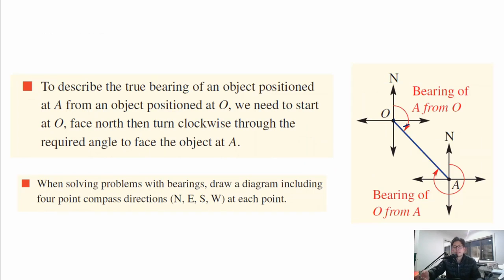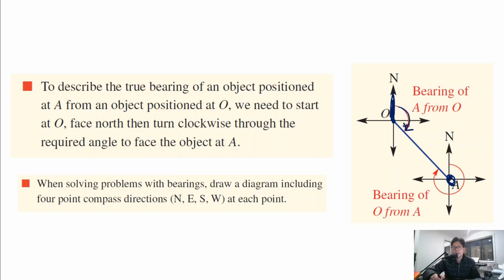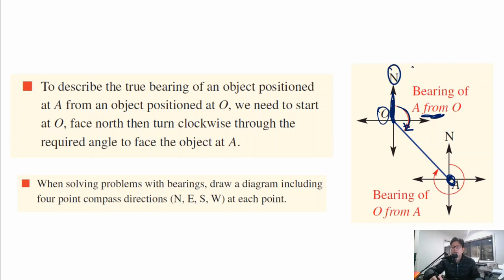To describe the true bearing of an object at A from point O: start at O, face north, then turn clockwise through the required angle to face object A. That angle is the true bearing of A from O. When solving bearing problems, draw a diagram that includes the four compass directions — north, east, south, and west — at each point, with arrows on either side.